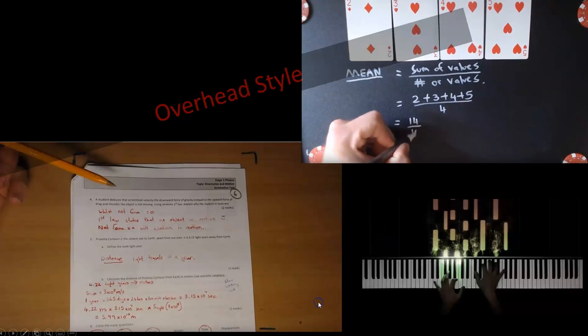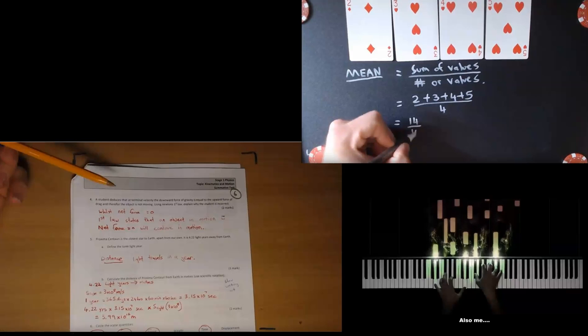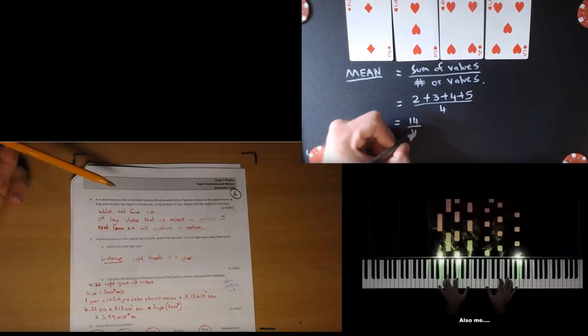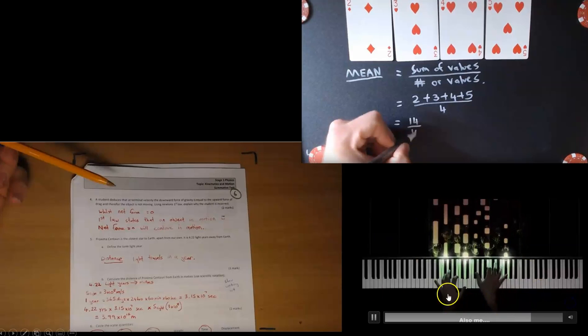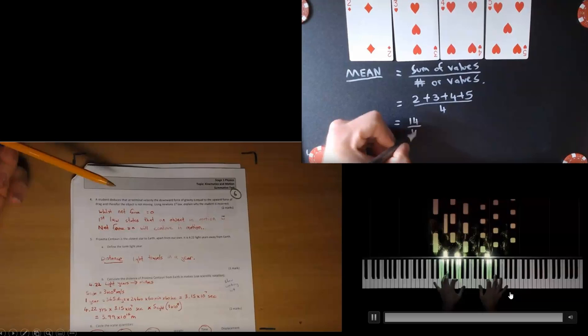The overhead style is a great technique for recording anything you want to see from above. You can use it for music and film yourself playing the piano, or for math lessons if you want to explain concepts like winning at poker.